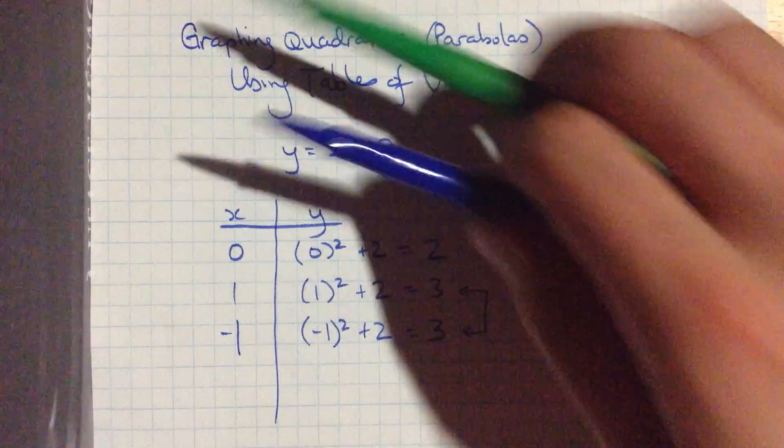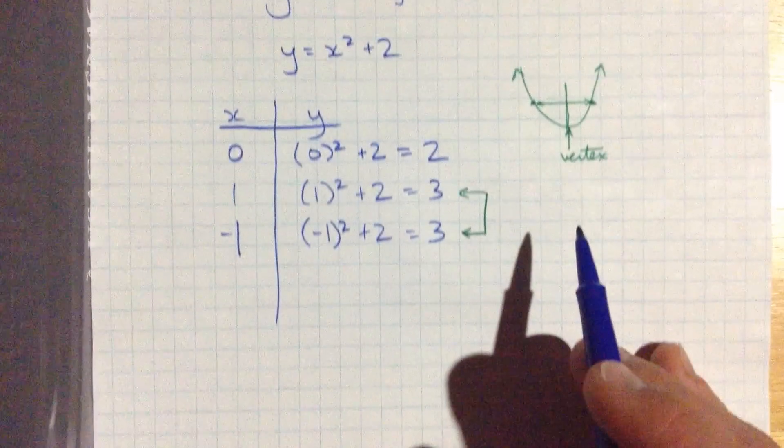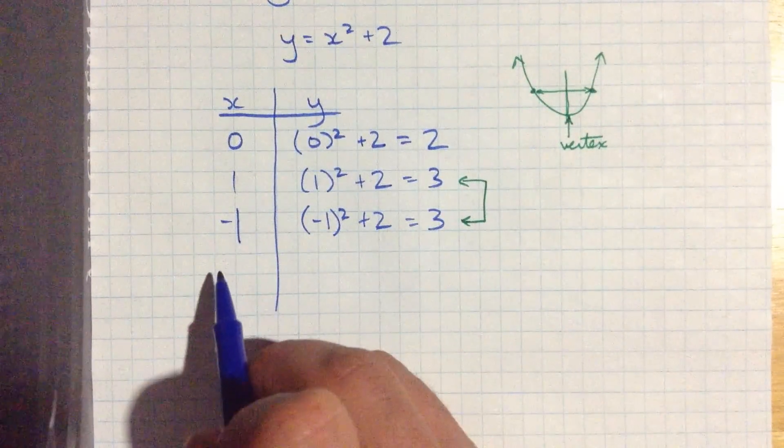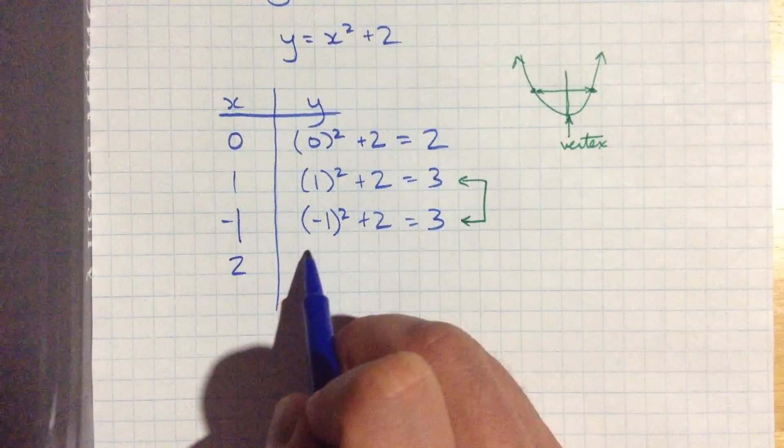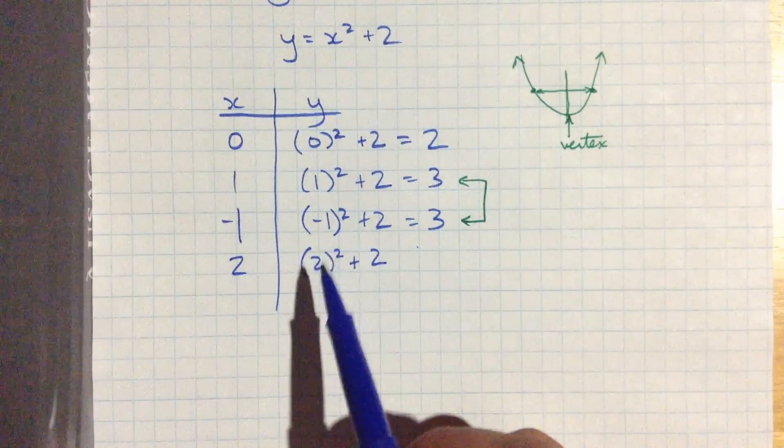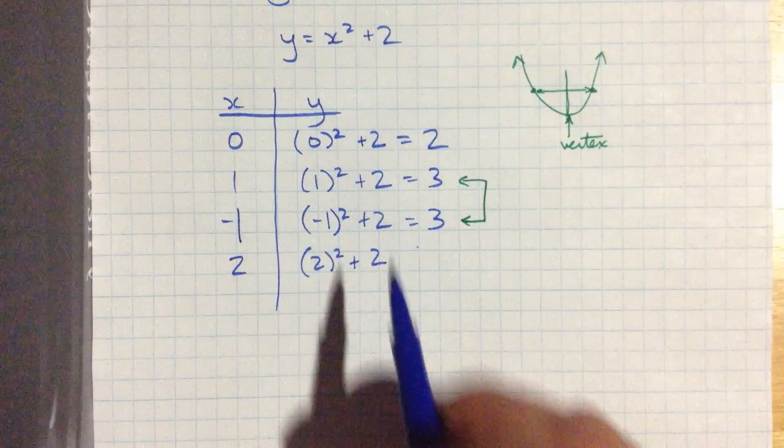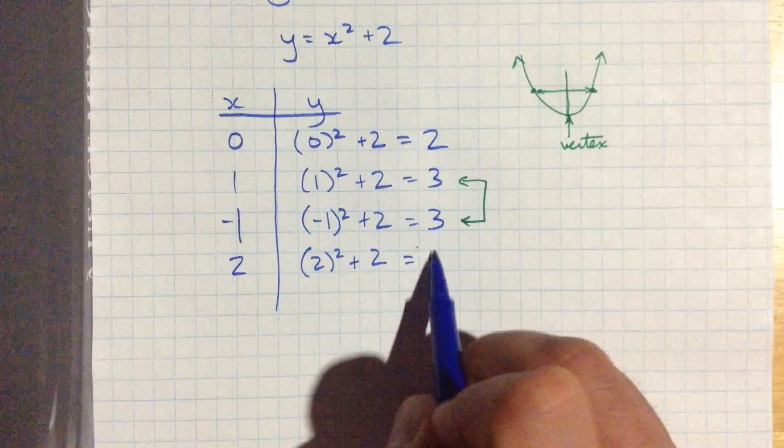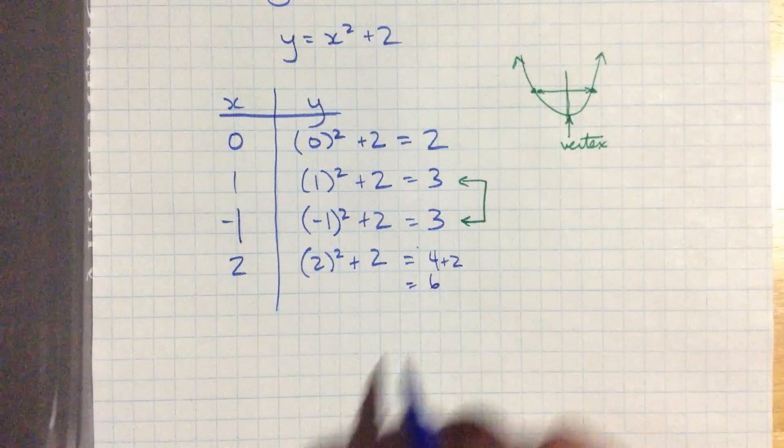So that's pretty nice. Let's do a couple more points. I know quite a bit of information about this parabola now. Let's do 2. So 2 squared plus 2. So I'm just substituting that x value into this equation here. That's 4 plus 2, which is 6.